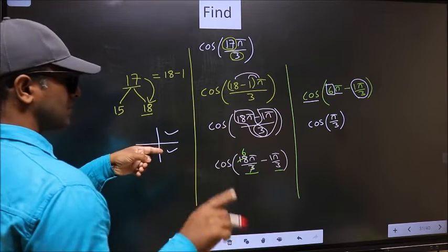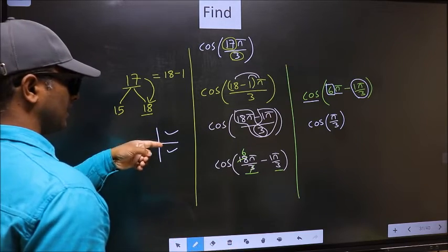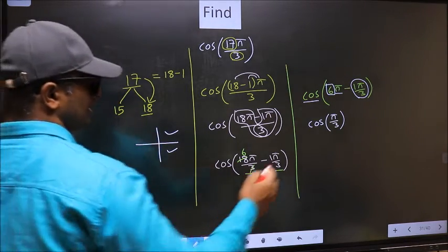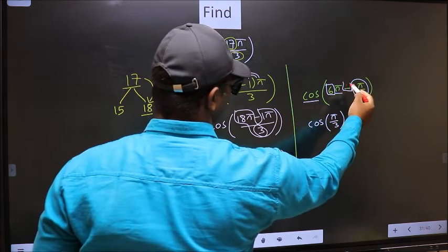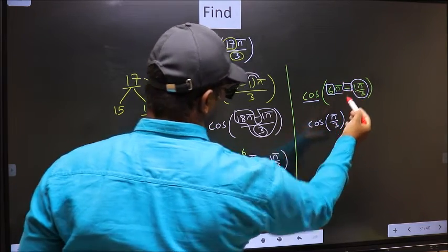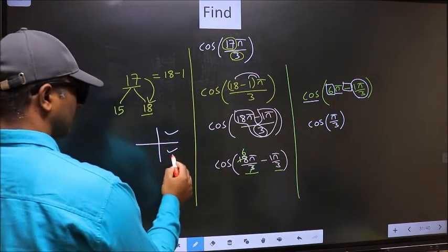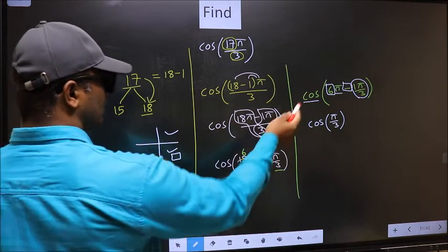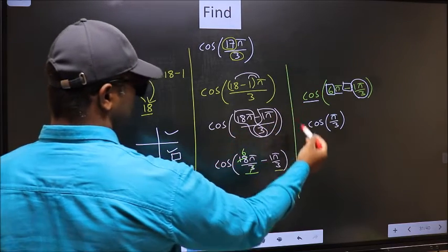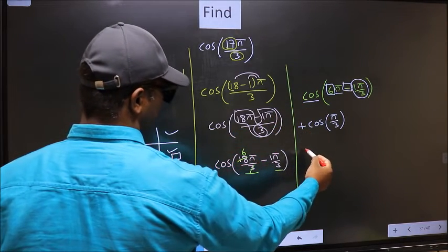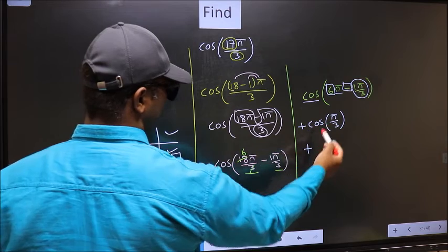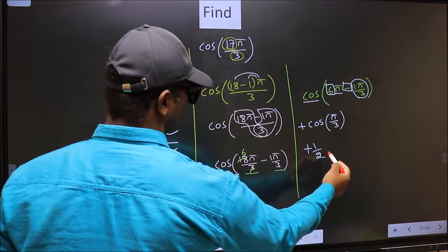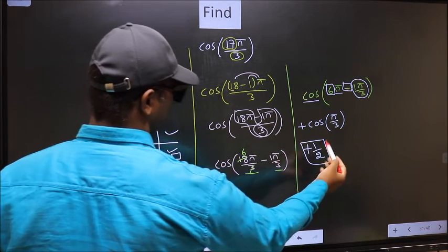So now to check which quadrant does it lie, we should look at this symbol. Here we have negative. That means angle lies in the fourth quadrant. And in the fourth quadrant, cos is positive. So we should put plus. So plus cos π by 3 is 1 by 2. This is our answer.